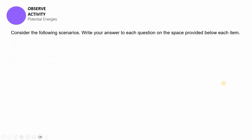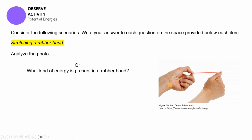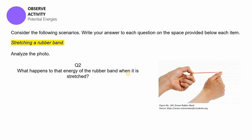We will now be considering the following scenarios, so please take note of your observations. The first one is stretching a rubber band. When you stretch a rubber band end to end, you can observe several things. Question one: what kind of energy do you think is present in a stretched rubber band? Question two: what happens to that energy of the rubber band when it is stretched?